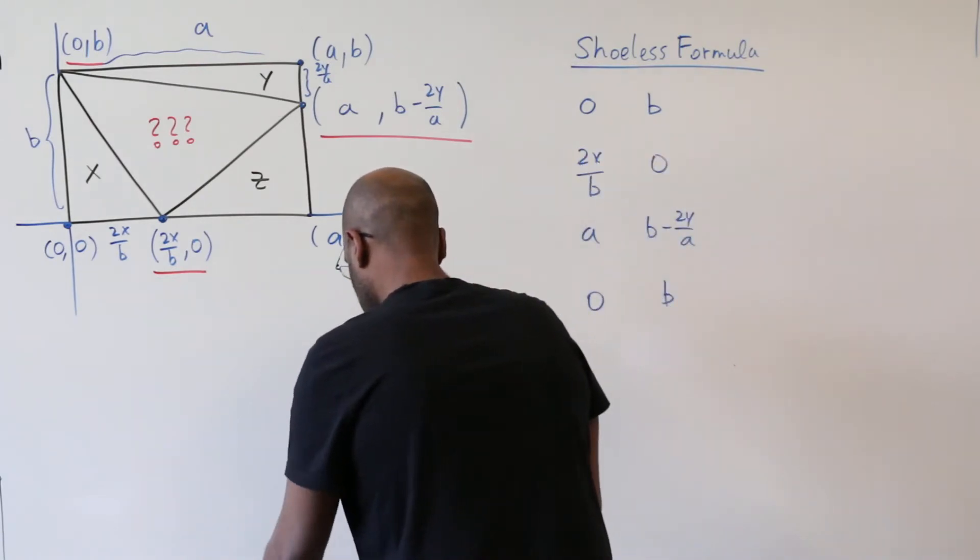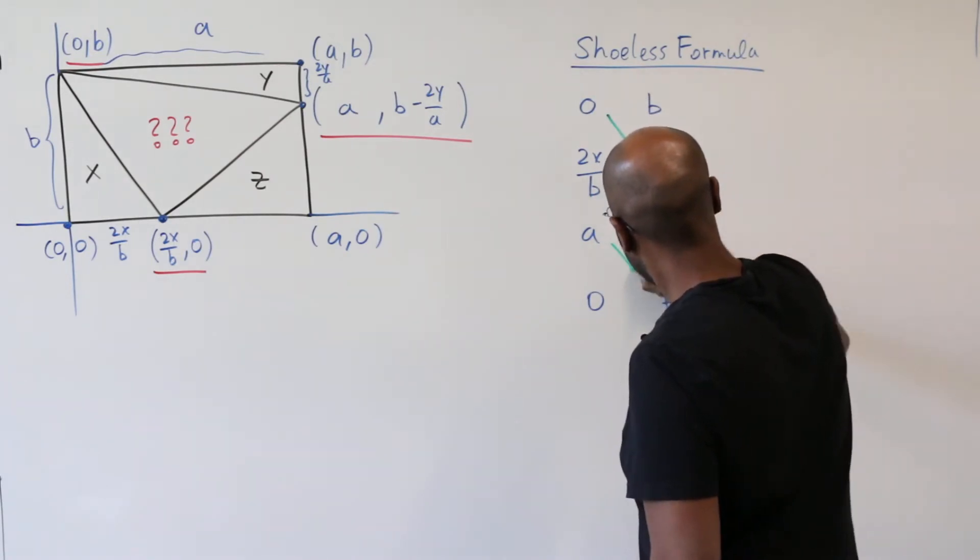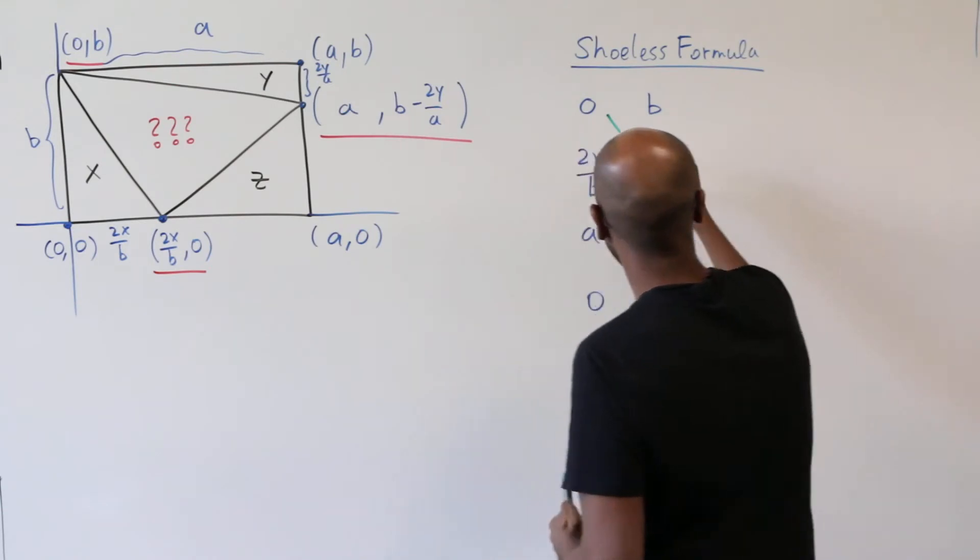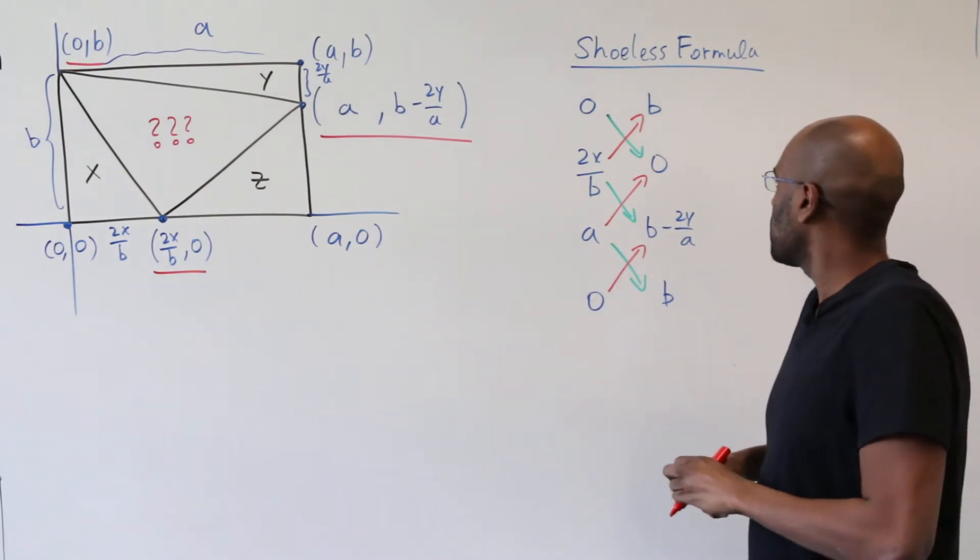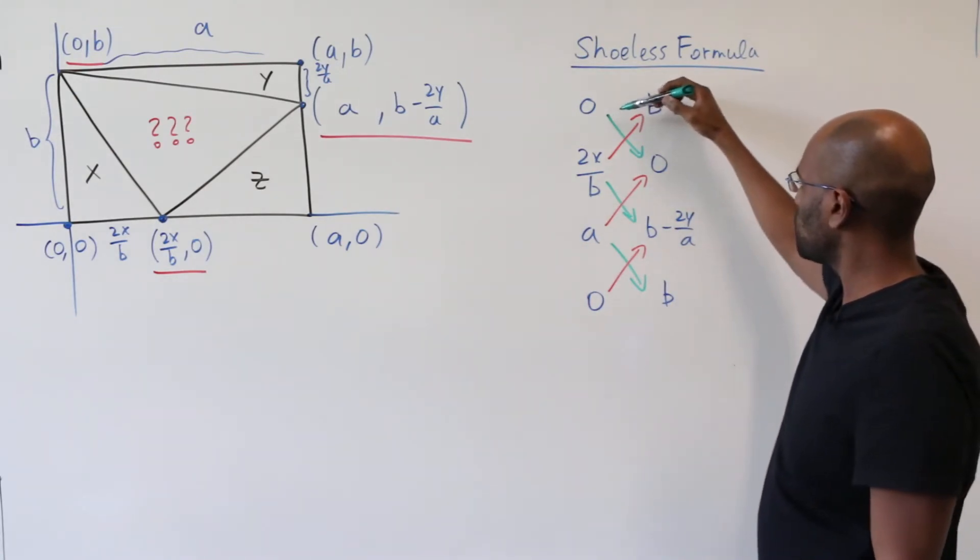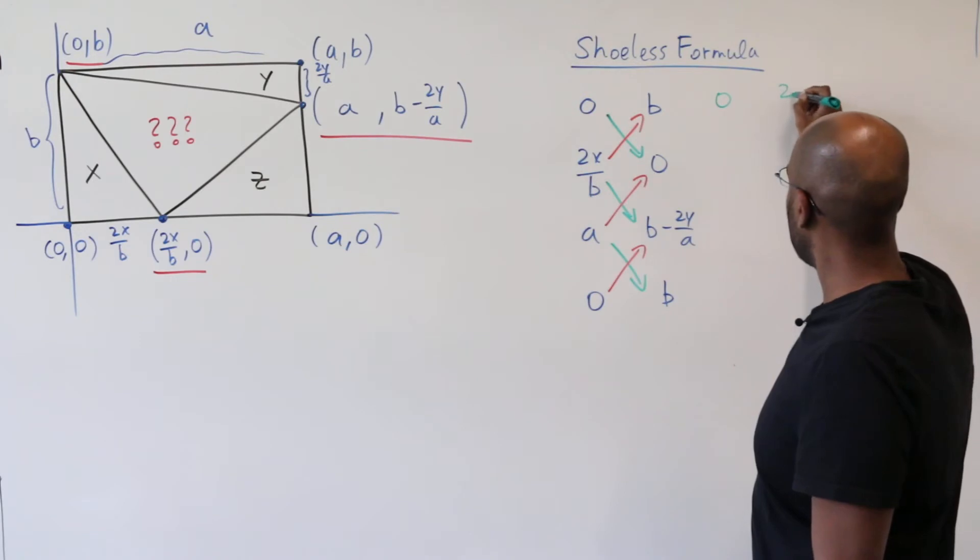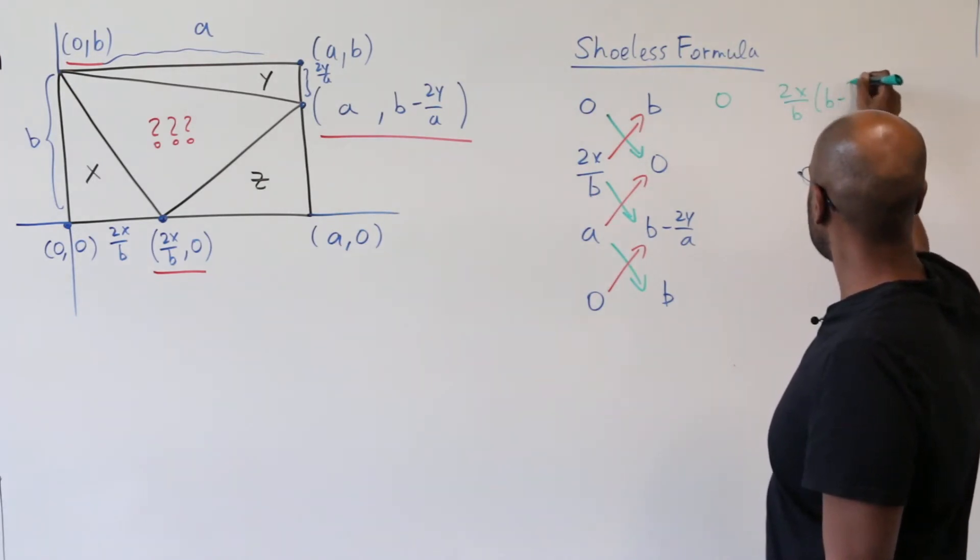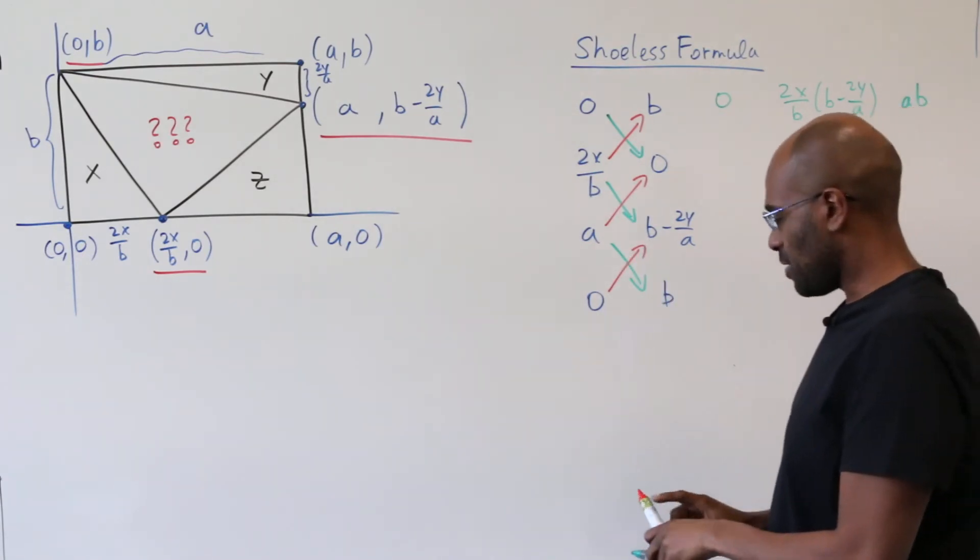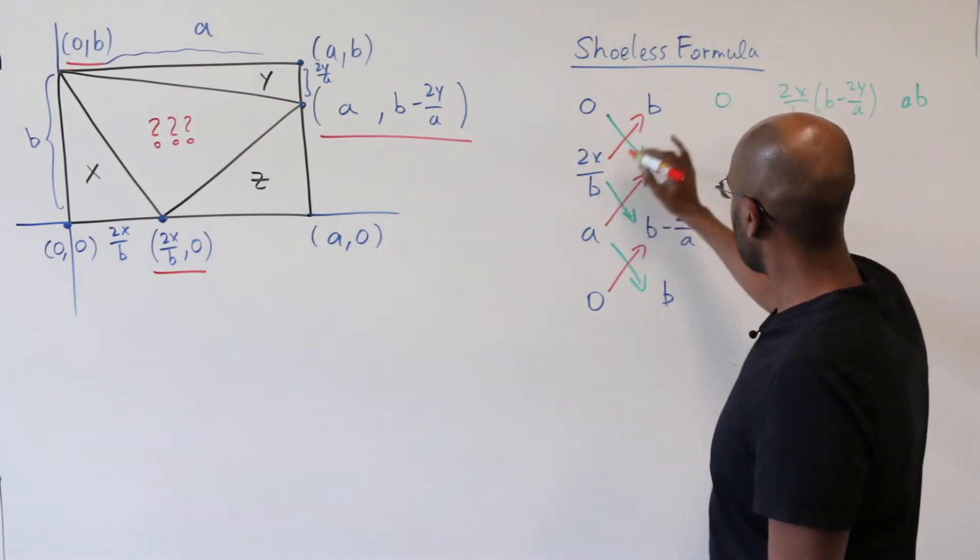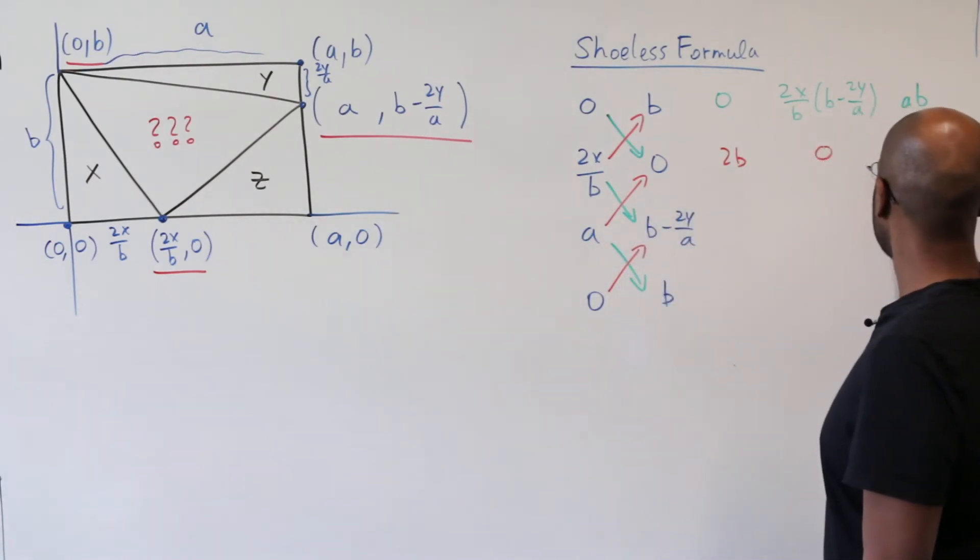And now I'm going to draw in shoelaces. The shoelaces are going to go downward in one direction and upward in the other. Now for each shoelace I'm going to write down the product of the values that that shoelace ties. So here we'll have a zero and then we'll have 2x over b times the quantity b minus 2y over a and then finally we have ab. All right, the upward laces we have 2x over b times b which is 2x and then we have a times zero which is zero and zero times another quantity which is zero.